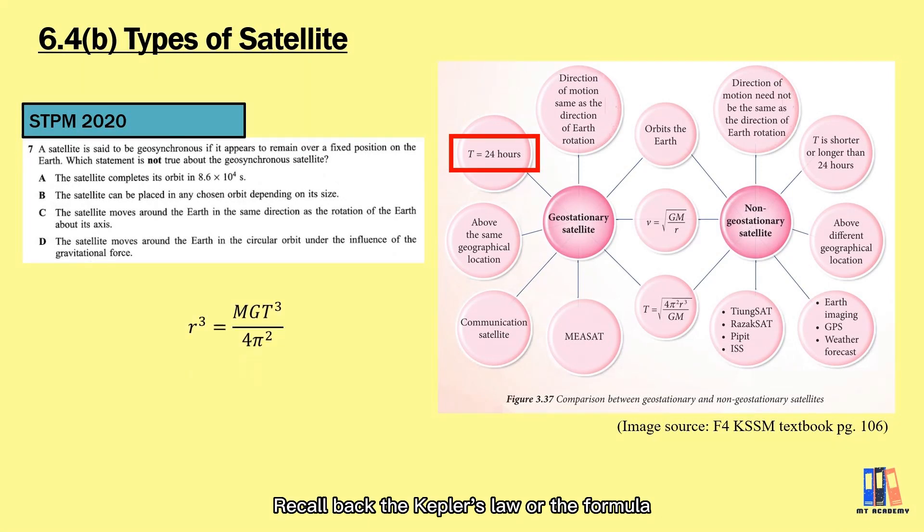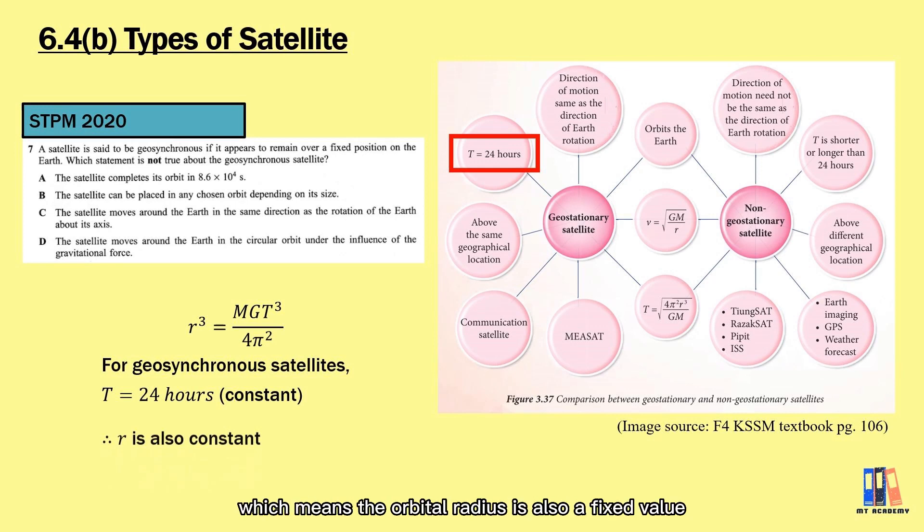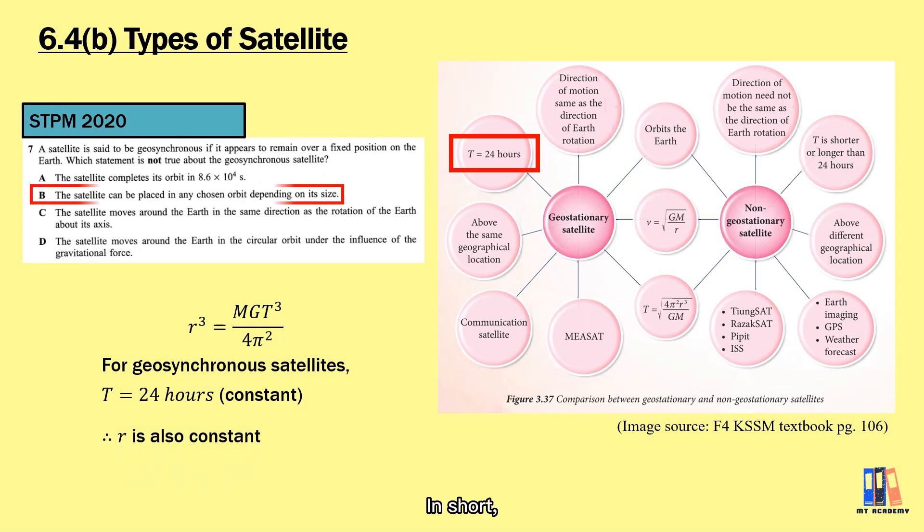Recall back the Kepler's law or the formula we derived just now. The first point is that the cube of orbital radius is proportional to the square of period, while other variables are constant. The M here is the mass of the Earth, so the size of satellite actually doesn't affect the period of circular motion. The second point is, if it is a synchronous satellite, the period must be fixed at 24 hours, which means the orbital radius is also a fixed value. In short, answer B is not true that all geostationary satellites are staying at a certain orbit.